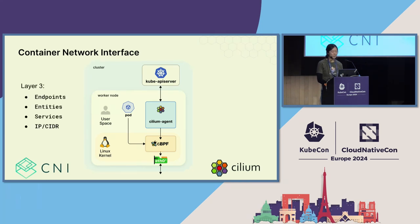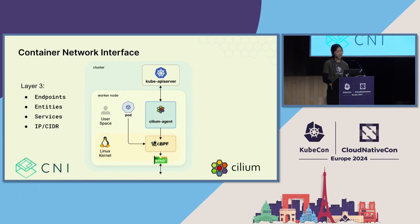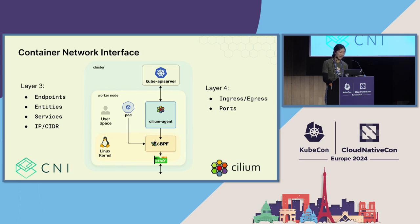Cilium allows you to create L3 — layer three — network policies based on the following: endpoints, services, entities, IPs, CIDRs. The term entities is used to describe remote peers which can be categorized without knowing their IP addresses. Cilium also has this concept of Cilium IDs where it groups pods or workloads together — it's a way to enforce security at a language that Cilium understands. And at the L4 or layer four level, you can have network policies on your ingress and egress and also on ports.